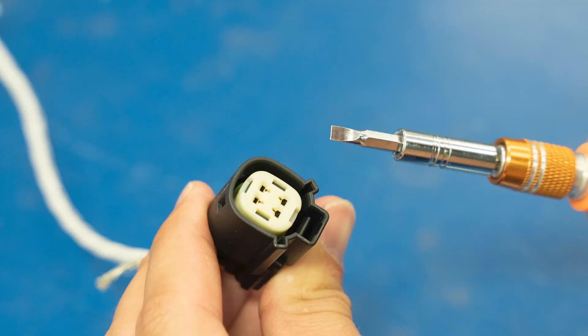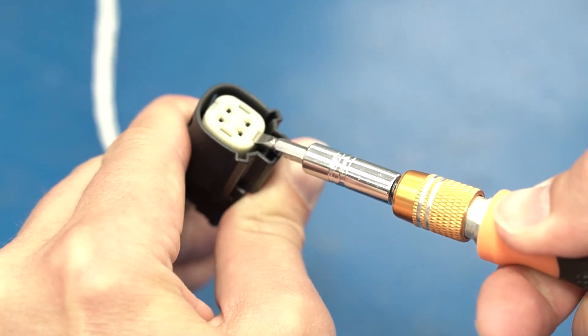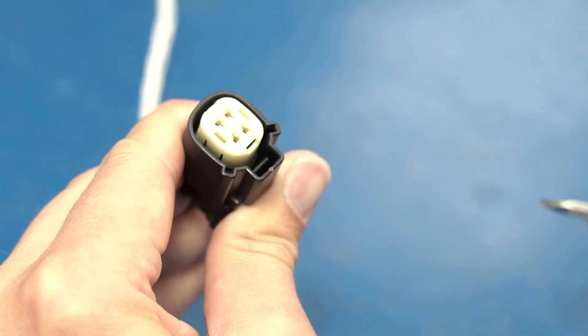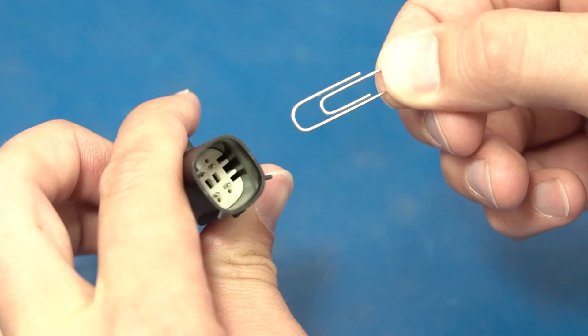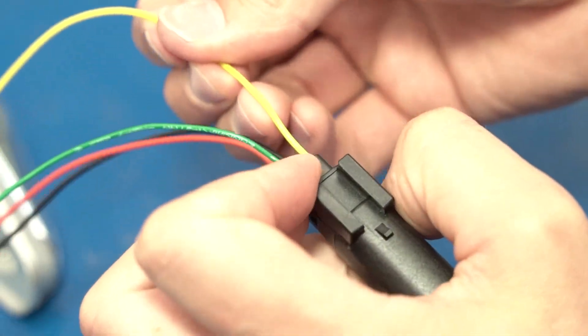Next grab the flat head and the female connector side. Place the flat head under the tab and press upwards. Now use the tool or again the paper clip as an alternate. You should hear a snapping sound and once you do, you can remove the wire.